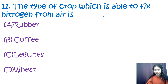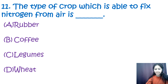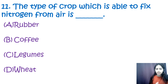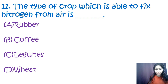Question 11: Which type of crop is able to fix nitrogen from air? Options are rubber, coffee, legumes, and weeds. The correct option is C — legumes. Plants such as peas and beans fix nitrogen from the air with the help of Rhizobium bacteria, and this process is known as nitrogen fixation.